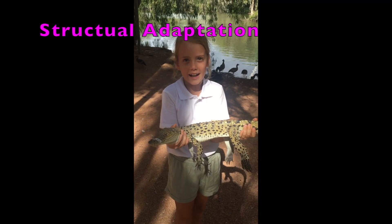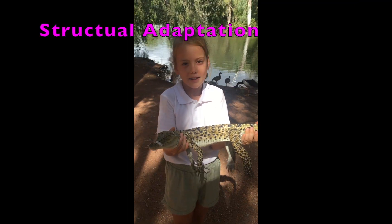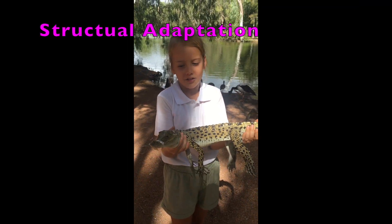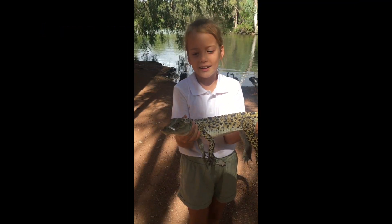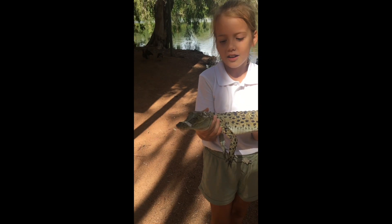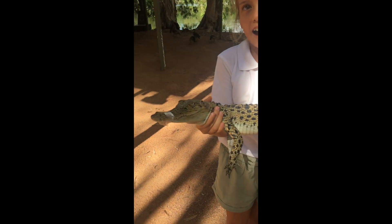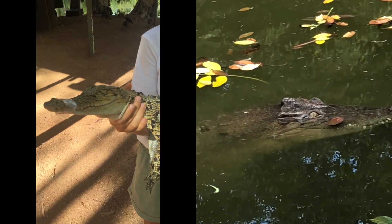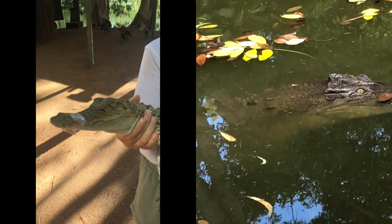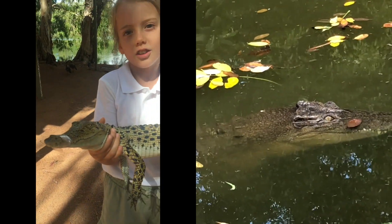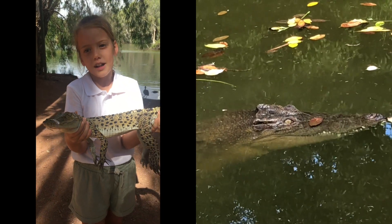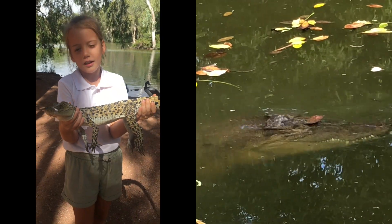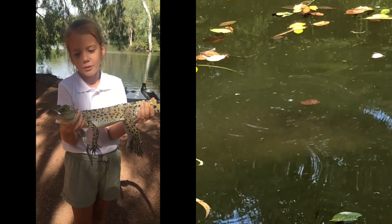Structural adaptations are similar to physiological adaptations but are seen on the outside. Crocodiles' eyes, ears, and nostrils are on the top of their head, so the crocodile can see, hear, smell, and breathe while the rest of its body is under water.